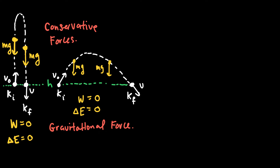For the gravitational force, we define a type of energy called gravitational potential energy, which is equal to M times G times H.